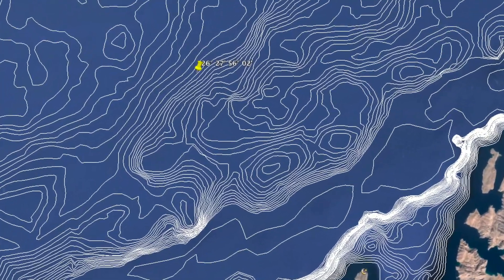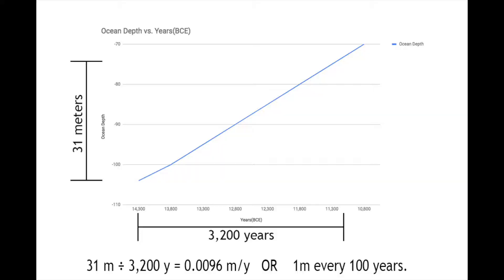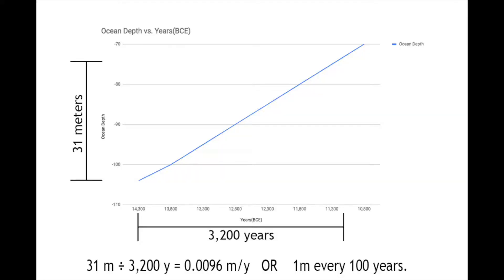But before we do, a bit of math is needed. When looking at this graph, it illustrates that between the two sites in Dr. Lambeck's work, the ocean rose 31 meters over 3,200 years. When we divide this to find out how many years it took for the ocean to rise one meter, we see that the average time is approximately 100 years.